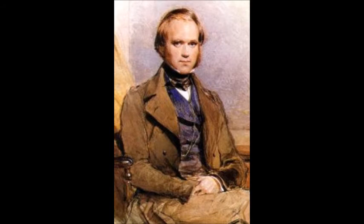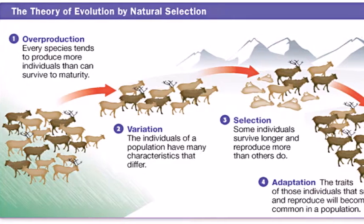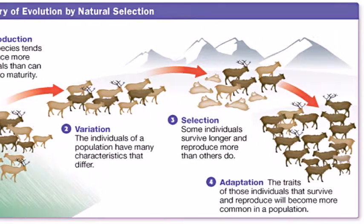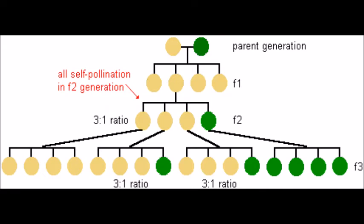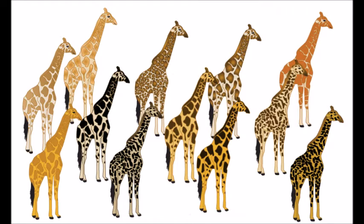Charles Darwin published On the Origin of Species in 1859, in which he outlined his theory of evolution by natural selection. Although his theory was perhaps the greatest breakthrough in the history of biology, his theory was incomplete. He didn't know about the mechanisms of inheritance and DNA had not been discovered yet. His theory relied on the fact that different individuals in a population differed from each other, but he was unaware of what caused this variation.